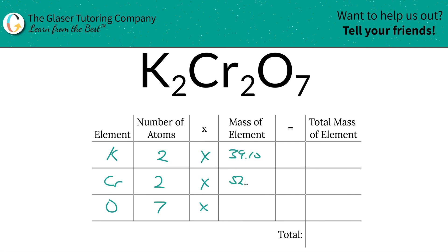Then we multiply across the row to find the total mass of the element. The total mass of potassium here is going to be 78.20.